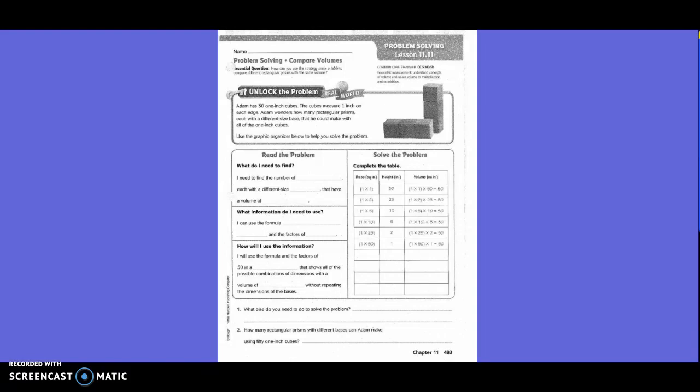Adam has 51 inch cubes. The cubes measure one inch on each edge. Adam wonders how many rectangular prisms, each with a different size base, that he could make with all of the one inch cubes. Use the graphic organizer below to help you solve the problem.